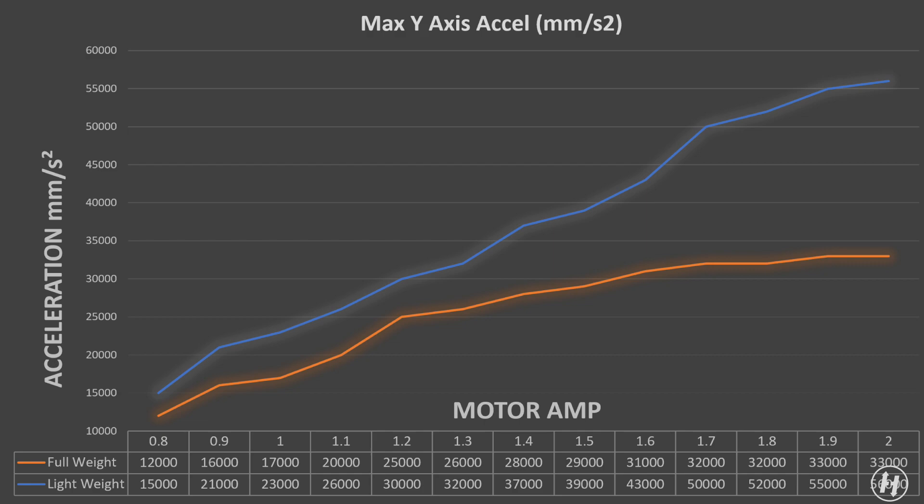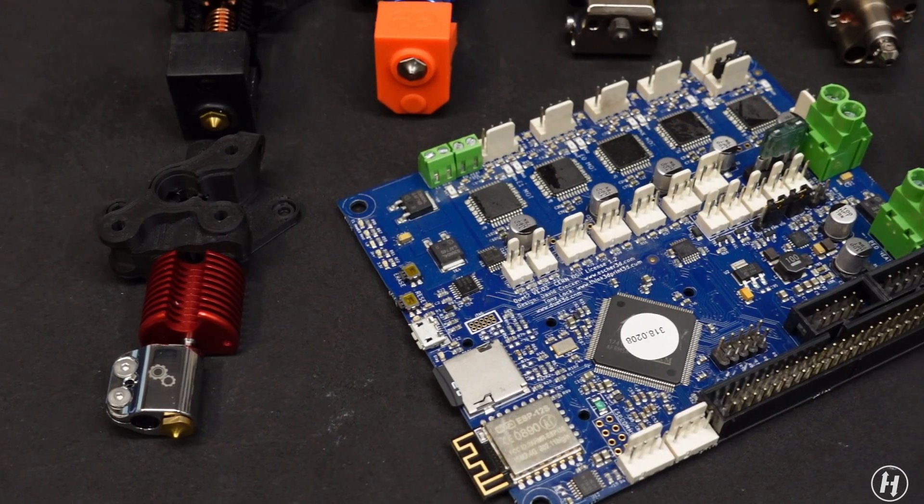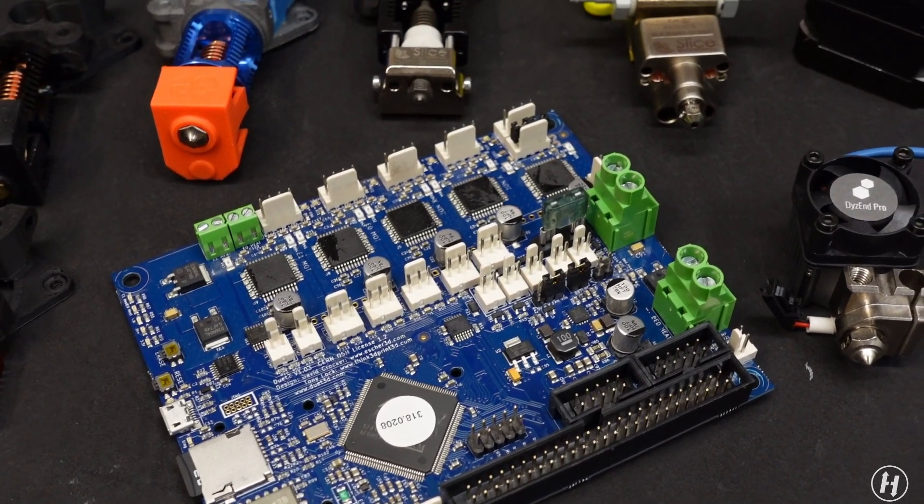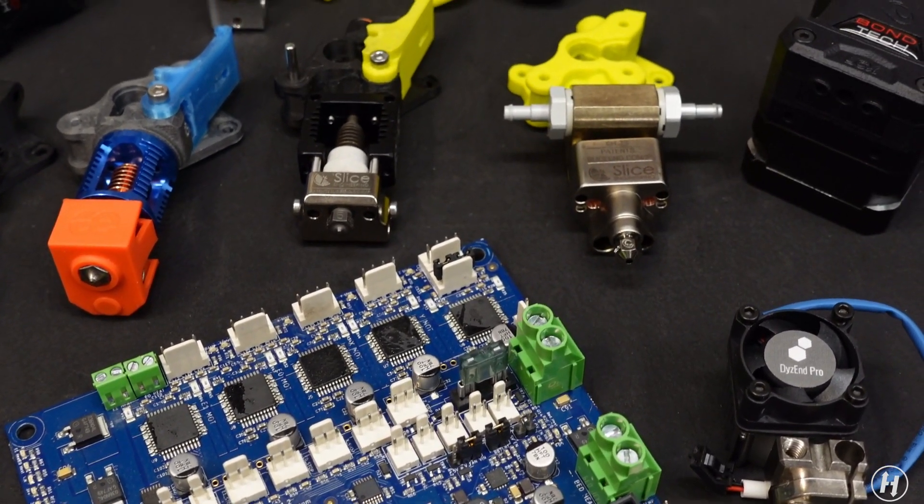The curves are really taking two different tangents. The heavy X-axis was clearly capping out at around 1.7 or 1.8 amp of motor current. By looking at the curve from the light one, I would be super curious to run the test at even higher current values. But I have already fried one Duet control board during this test when going over 2.2 amps.